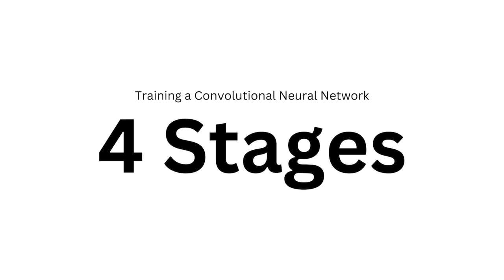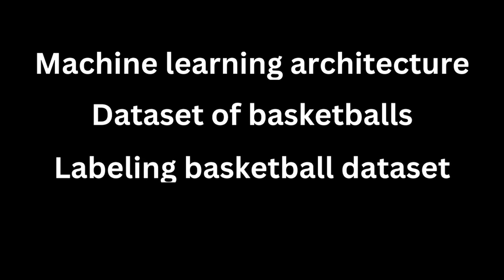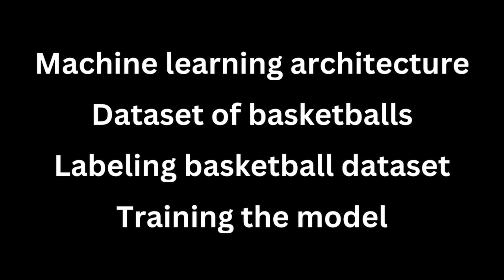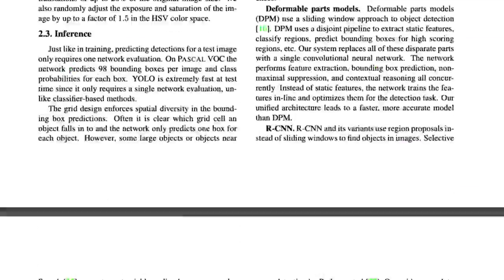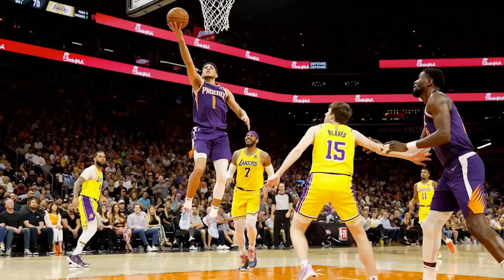This process involves four crucial stages: choosing a machine learning architecture, gathering a diverse dataset of basketball images, labeling these images, and then training a model. I've chosen YOLO, which stands for You Only Look Once, as the architecture for the machine learning model. Picture a lively basketball game with players moving, balls flying, and fans cheering — for a computer vision system, this is just a large grid of pixel data.